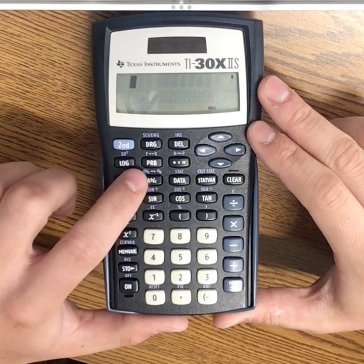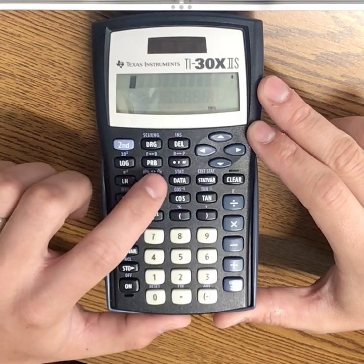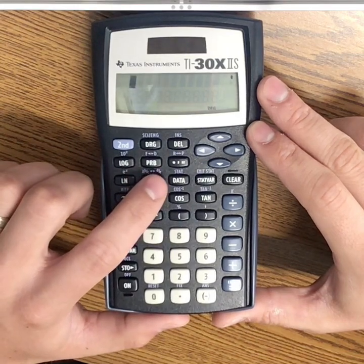So if you notice, right above the fraction button says A, B over C, and then these arrows between that and D over E.